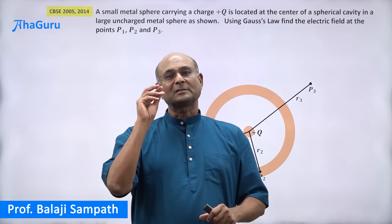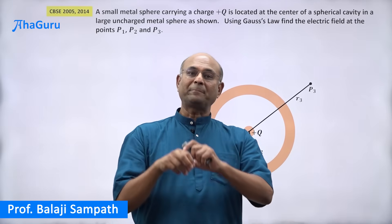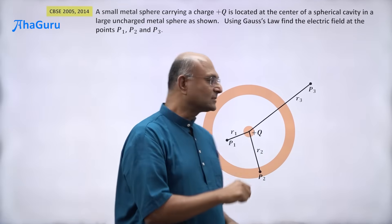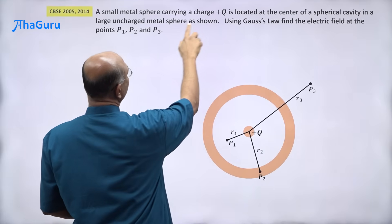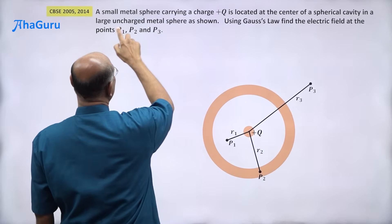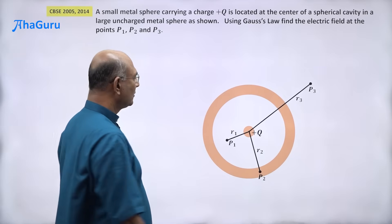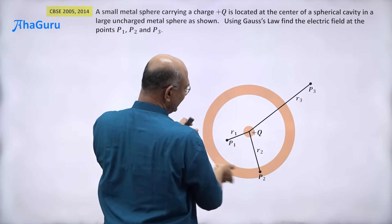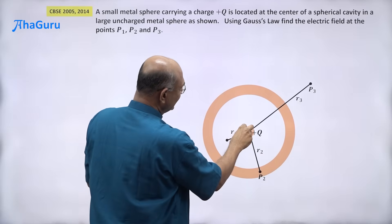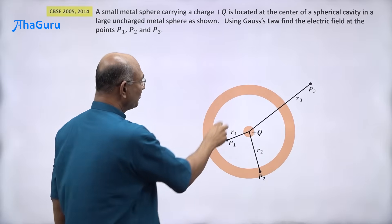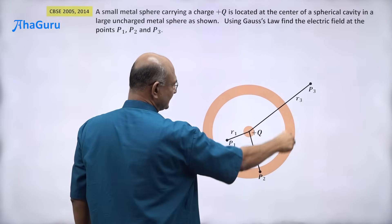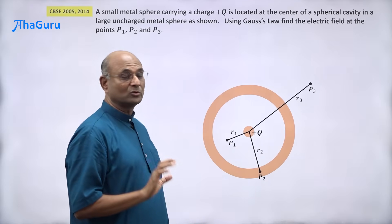In this question we have a small metal sphere kept inside the cavity of a large metal sphere. A small metal sphere carrying a charge plus q is located at the center of a spherical cavity of a large uncharged metal sphere. This is the large uncharged metal sphere, this is the cavity portion, this is the center of the cavity, and that's where we have kept this small metal sphere with charge plus q. The large metal sphere has no charge — it is uncharged.